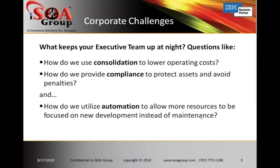I want to talk to you today about some of your corporate challenges. The executive team is looking to make your company more lean — they need to do more with less. How do we do that? We do things like consolidation, lowering operating costs. At the same time, we need to deal with service level agreements and compliance, so we've got to find ways to protect our assets and avoid different kinds of penalties. We're also looking at automation as a way to free up our resources so that they can be focused on new development instead of maintenance of applications.